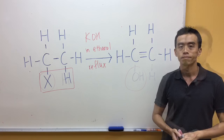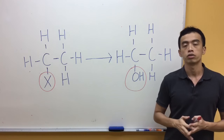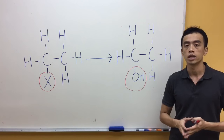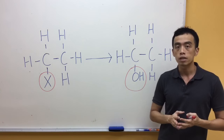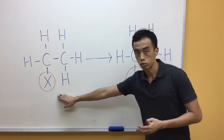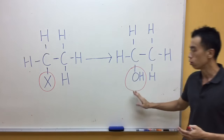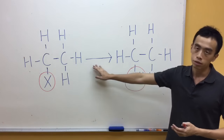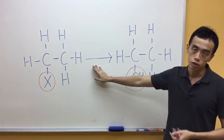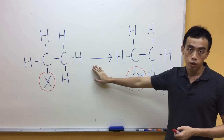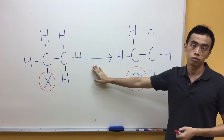Now the second reaction of haloalkanes involves the nucleophilic substitution of our halogen to our OH functional group. The reagents and conditions for this conversion are NaOH aqueous, reflux.